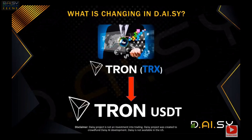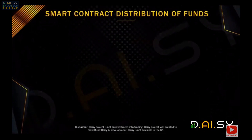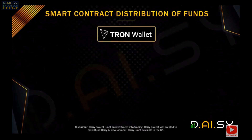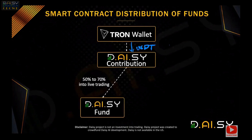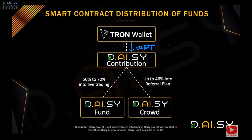We're calling it Tron USDT because it has to be transacted on the Tron blockchain, since the Daisy smart contract is based on the Tron smart contract. Let's look at the actual smart contract distribution of funds, which we're all very familiar with. The distribution doesn't change — you still use your Tron wallet. Your Daisy contribution will now be made in USDT transacted on the Tron blockchain. 50–70% goes into live trading, and up to 46% into the referral plan.